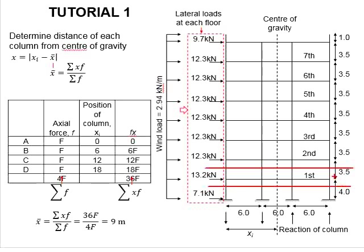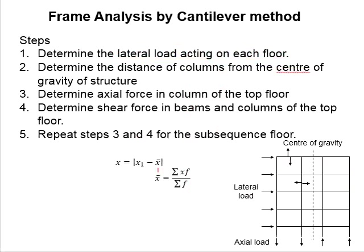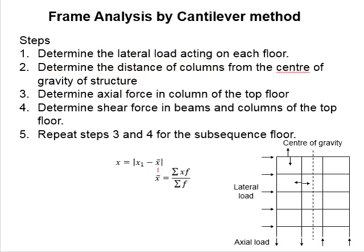For the ground floor, the floor height is 4 meters. The lateral load of 13.2 kN is obtained by multiplying 2.94 with the factor of safety 1.2, with half of the height of the upper story and another half of the height of the lower story. Once you have obtained the lateral load acting on each floor, you need to determine the distance of the columns from the center of gravity of the structure, and identify the location of the center of gravity.